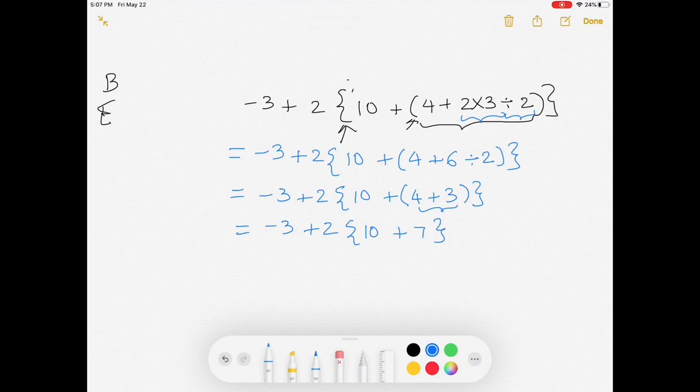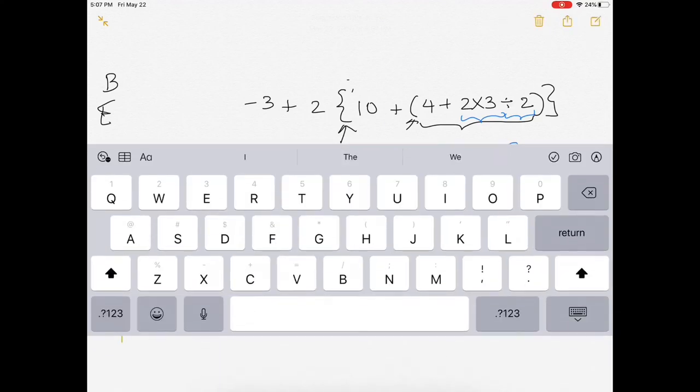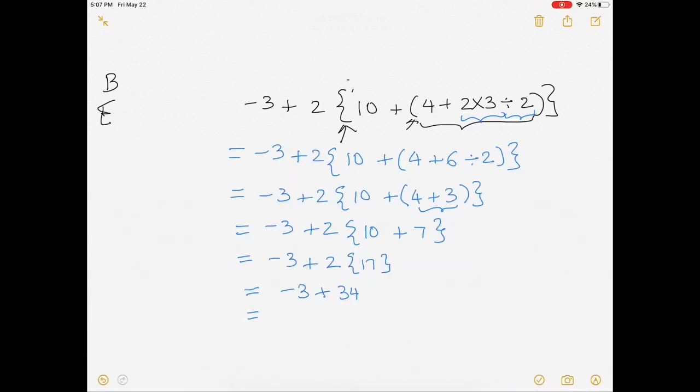And now look what we are left with. We are done with the small bracket, but we still are left with the big bracket. So we're going to work on that, which is going to be 10 plus 7, which is 17. And then we have again left with multiplication: 2 times 17 is 34. And then negative 3 plus 34 is 31. And that's the answer.